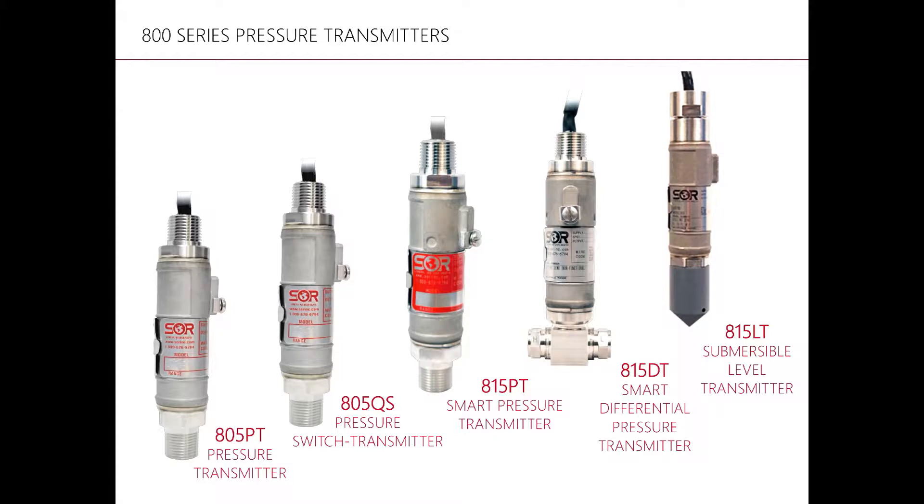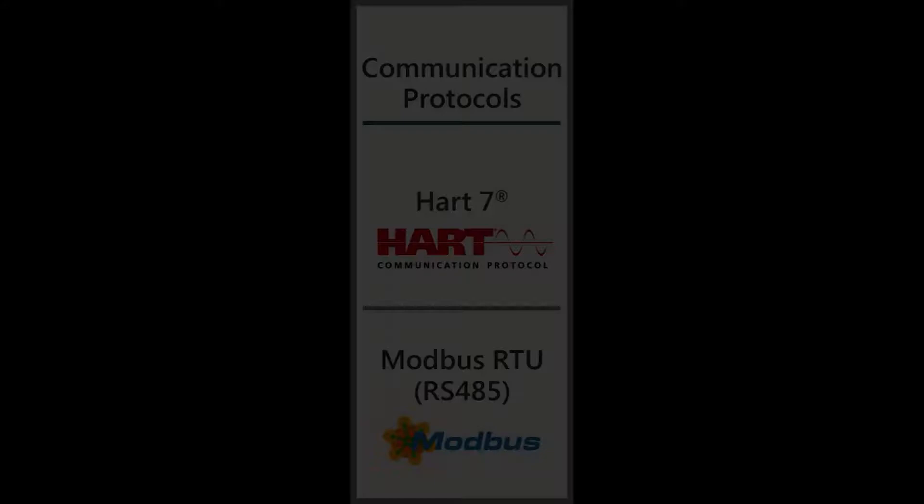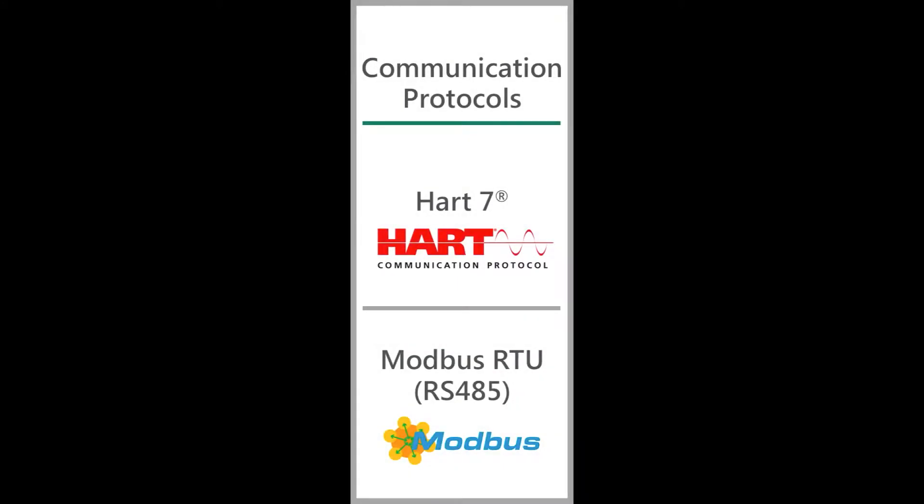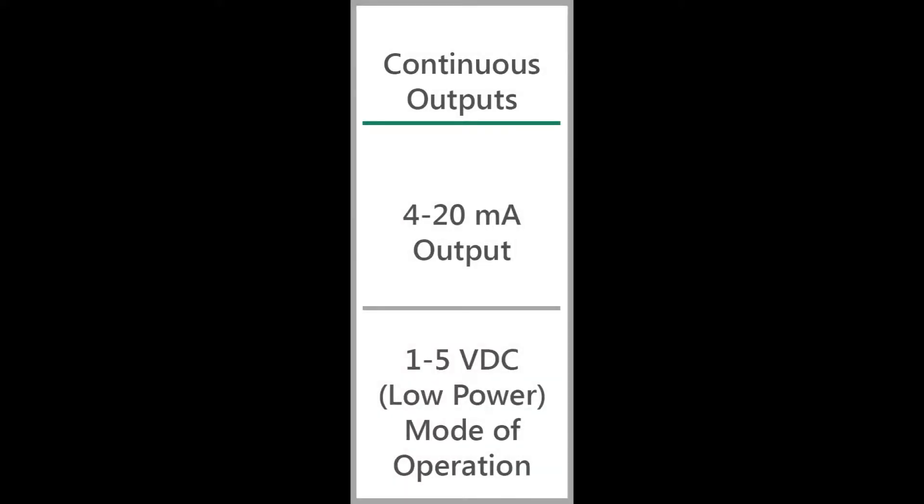The 815LT is actually the same transmitter as the 815PT except it is now submersible and has all the same great features and benefits. This includes HART communication protocol, Modbus RS-485 serial communications, 1 to 5 volt DC output, as well as 4 to 20 milliamp output. You get all these features whether you ask for it or not.